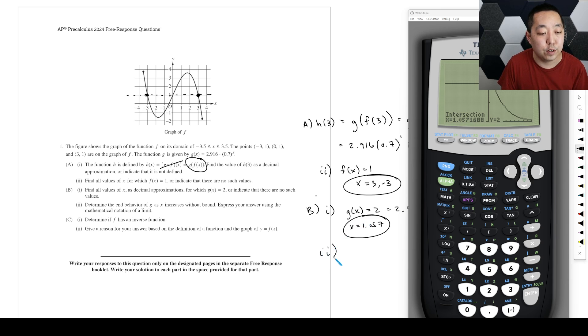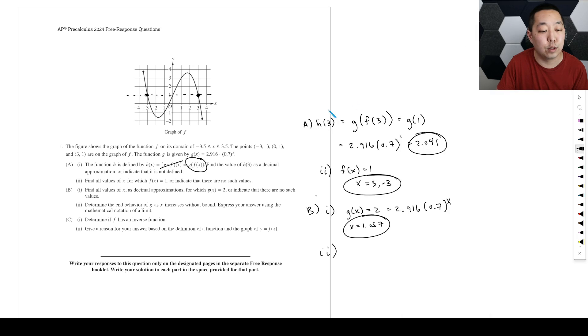Determine the end behavior of G as X increases without bound. Express your answer using the mathematical notation of a limit. So as X increases without bound is the limit as X goes to infinity of G of X. And so what we want to know is when this gets bigger and bigger, this is an exponential function. And because this number is less than 1, it's going to shrink, shrink, shrink. We saw the graph. It's going to shrink and approach 0. So that is the limit notation. You want to say positive infinity because we're increasing and going to the right there.